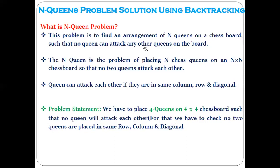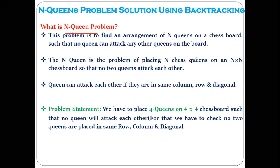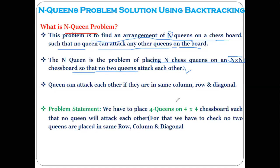Yesterday we already discussed what exactly the N-queen problem is. It is a problem to find the arrangement of N queens — where N can be 4, 8, and so on — on the chessboard such that no two queens can attack each other on the board.